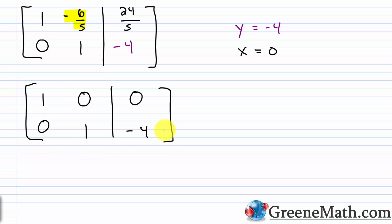So in most cases reduced row echelon form is just a little bit quicker. You should understand both forms because you might be tested on either. You have row echelon form — ones down the diagonal with zeros below — and reduced row echelon form — ones on the diagonal with zeros everywhere else in the coefficient columns.